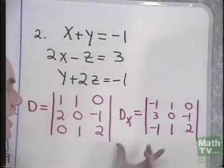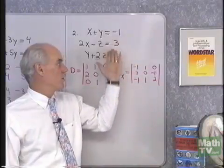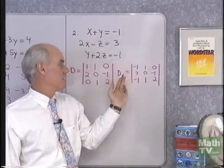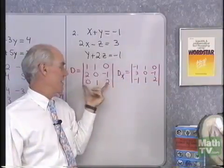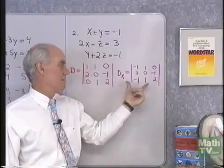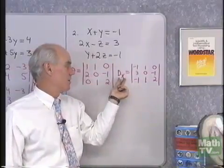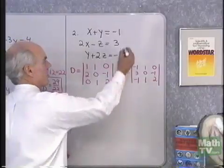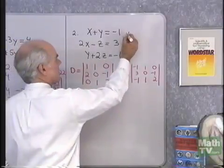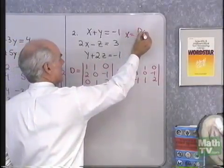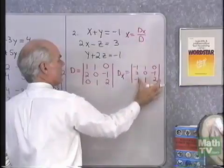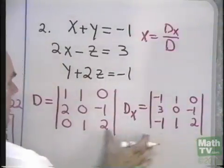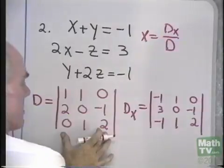The x-coordinate of the point where these three planes intersect is D sub x divided by D. So if I evaluate D sub x and evaluate D, and take the ratio of D sub x to D, I get the x-coordinate of this system. So x is equal to D sub x divided by D.